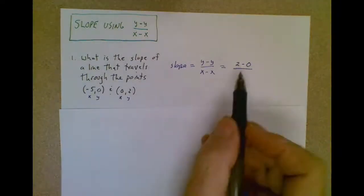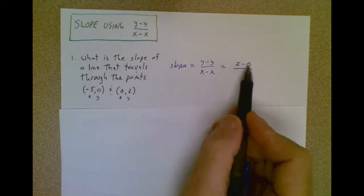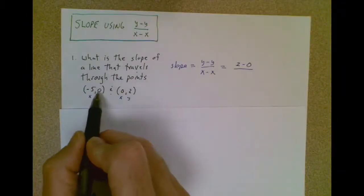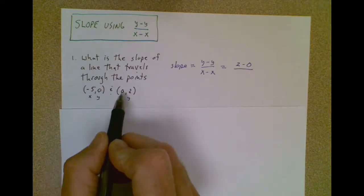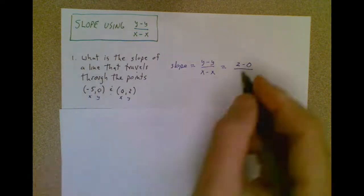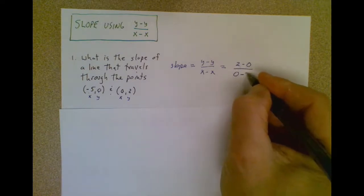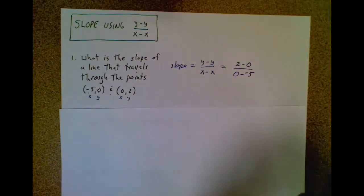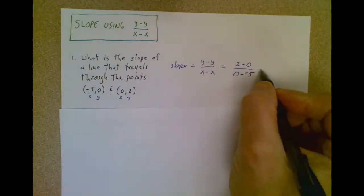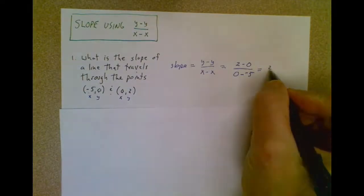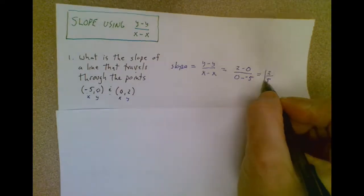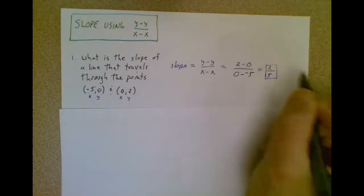Be aware, whatever order you went for your y's, you have to go in the same order with your x's. So because I went 2 minus 0 for my y's, I now have to go 0 minus a minus 5. Minus a minus 5, be careful, because subtraction and negatives are your enemy in algebra. Minus a minus 5 is like 0 plus 5, so I get a slope of 2 fifths.